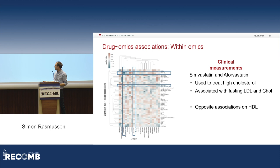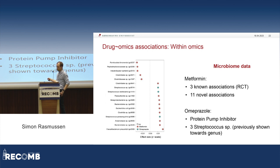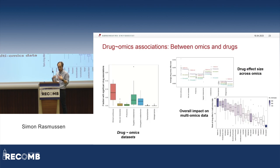We can also look at other omics data. Here is the microbiome data. Metformin is a very commonly used drug in type 2 diabetes. We find it to be associated with 14 different gut microbes, three of which have actually been shown in randomized controlled trials to be affected by metformin — so these are actually real changes. We also find for omeprazole, which is a proton pump inhibitor that increases the pH of your gut, that three bacteria from the oral microbiome are found in the gut microbiome as well — which makes perfect sense because if you increase the pH, they are able to survive.